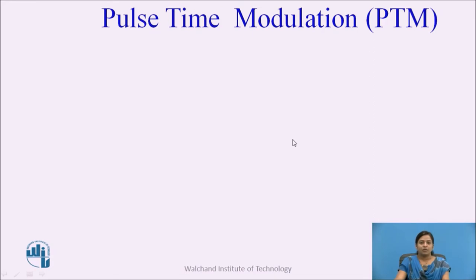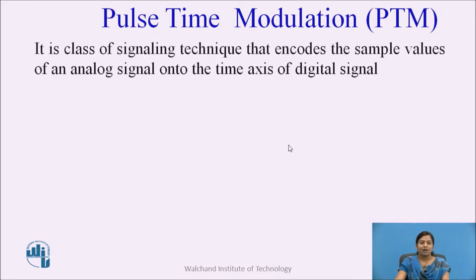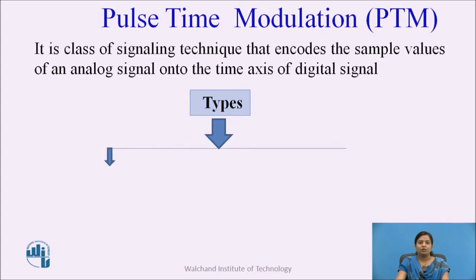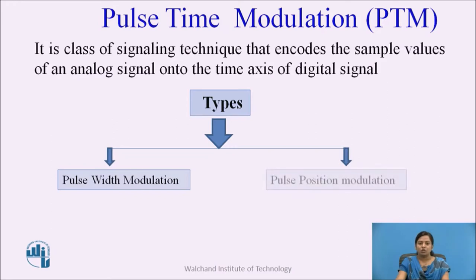Pulse time modulation, that is PTM, is the class of signaling techniques that encodes the sample values of an analog signal onto the time axis of a digital signal. There are two types of PTM: first is pulse width modulation, that is PWM, and second is pulse position modulation, that is PPM.